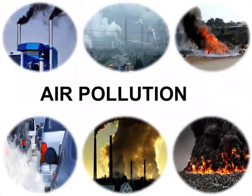Air pollution is a mixture of solid particles and gases in the air. Major sources are car emissions and chemicals from factories. Dust, pollens, and mold spores may be suspended as particles. Ozone, a gas, is a major part of air pollution in cities — when ozone forms air pollution it is called smog. Some air pollutants are toxic and they are called poisonous. The major sources are car emissions and chemicals from industries and factories, resulting in negative effects in terms of ozone gas, smoke, and various toxic air pollutants.